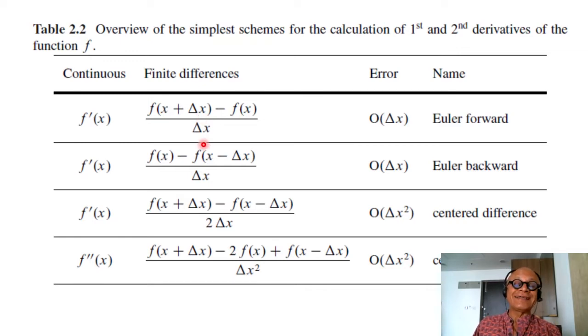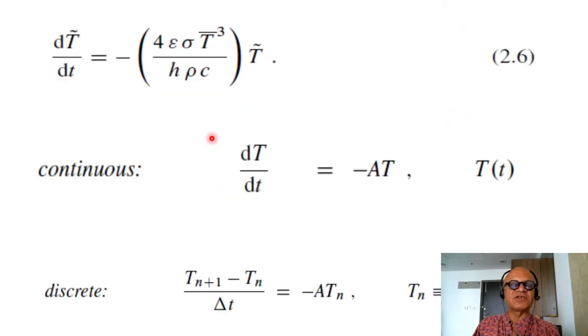And there is no reason why delta T or delta X or delta Y, delta Z, whatever, they have to be constant in time or space. There are many situations in which we end up using varying discretization steps. Let's say delta X, delta T, delta Y are the steps of discretizations.